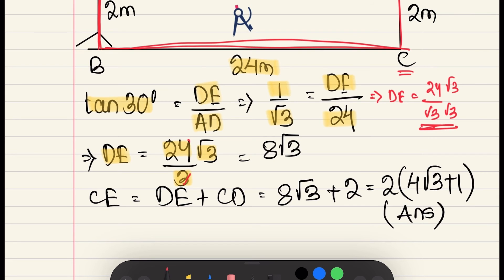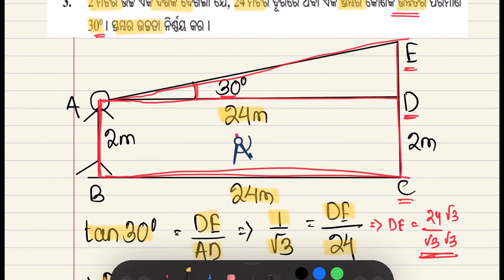And root 3 is there, so it is equal to 24 root 3 divided by root 3 into root 3. So, 24 divided by 3 is equal to 8, so 8 root 3 is equal to DE. DE is equal to this distance is equal to 8 root 3.